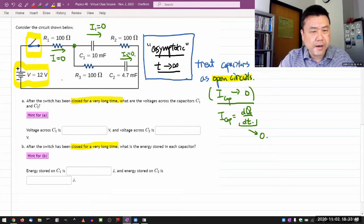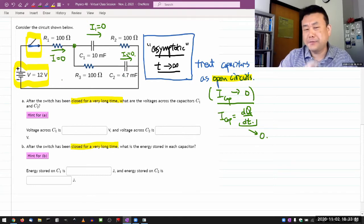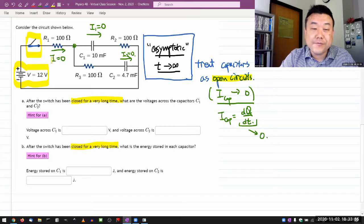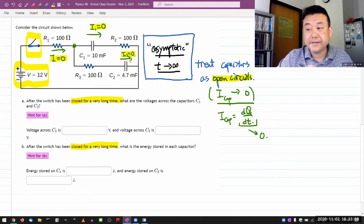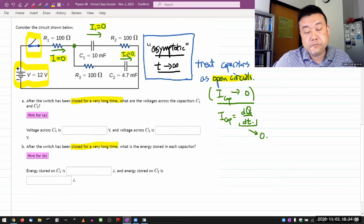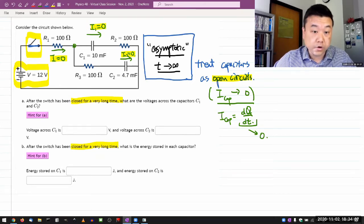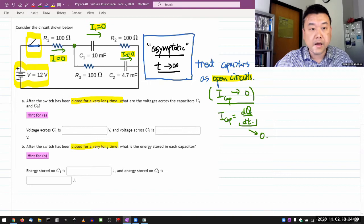We have to still answer these questions somehow. These actually do give you some information, which is that you can always relate voltage change across a resistor with the current through them by Ohm's law.